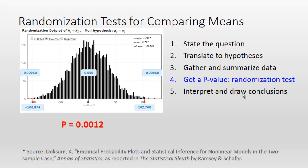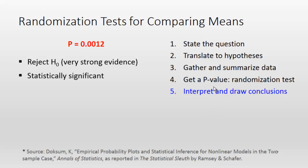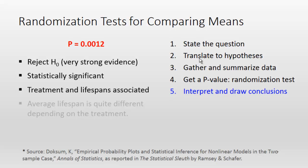Now it's time to interpret and draw conclusions. A p-value of 0.0012 is very strong evidence against the null hypothesis, so we're rejecting it. We don't think random variation was responsible for the difference in the means. We found a statistically significant difference between the means of the two samples — treatment and lifespans do appear to be associated. In plain language: the average lifespan is quite different depending on the treatment. On average, it was quite a bit shorter in the bacilli group than in the control group.